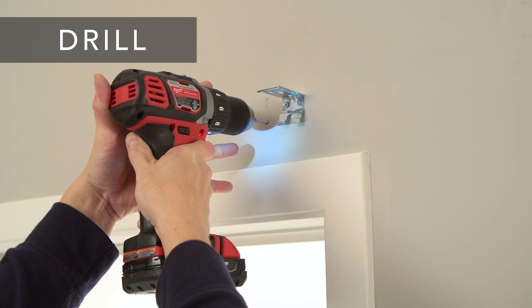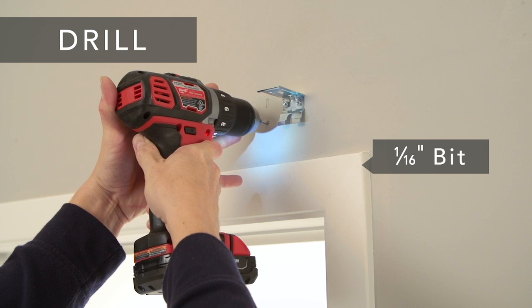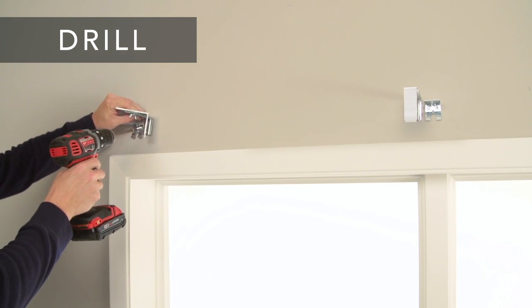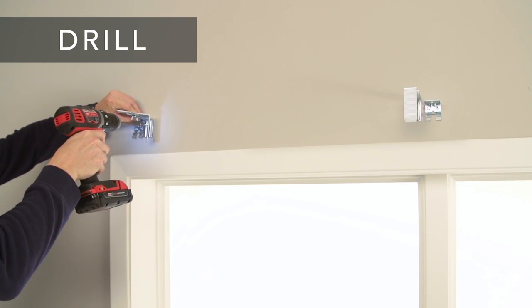Drill pilot holes for the screws using a one sixteenth inch bit. Now screw the brackets into place using two screws per bracket.